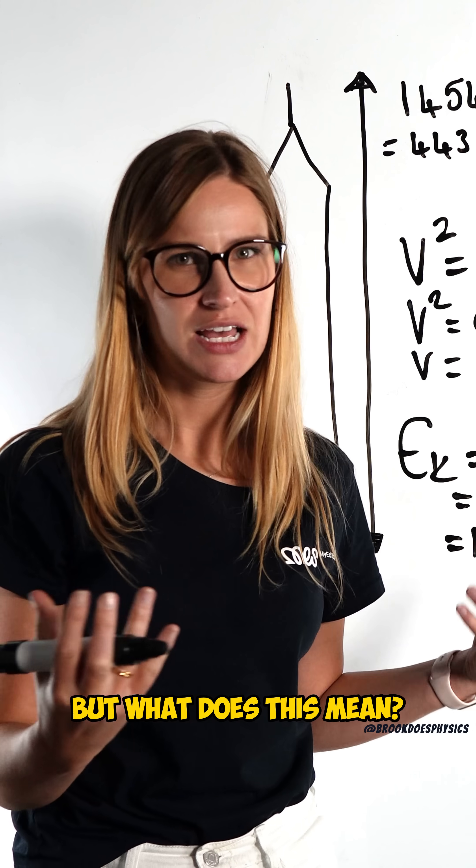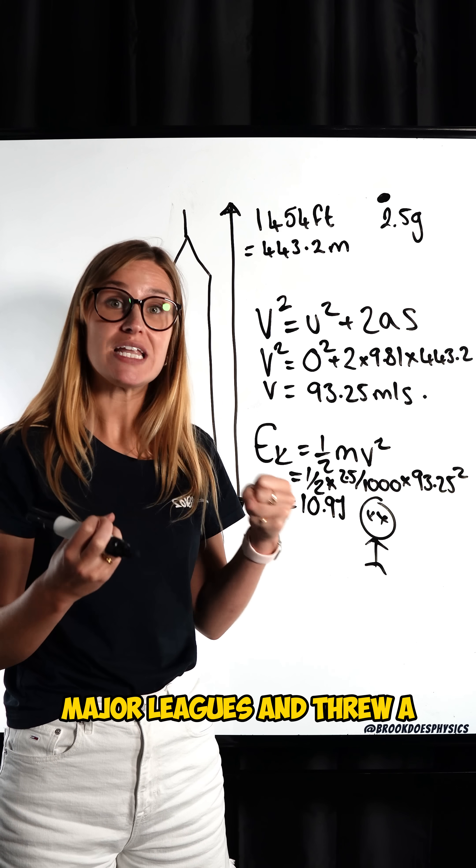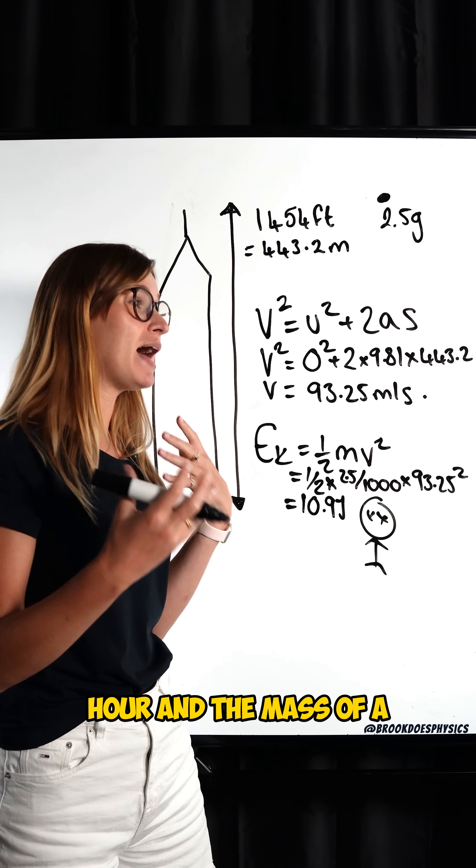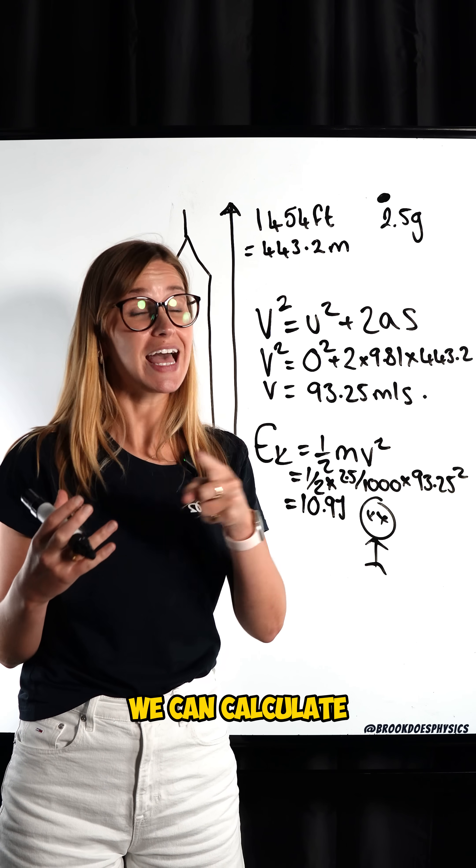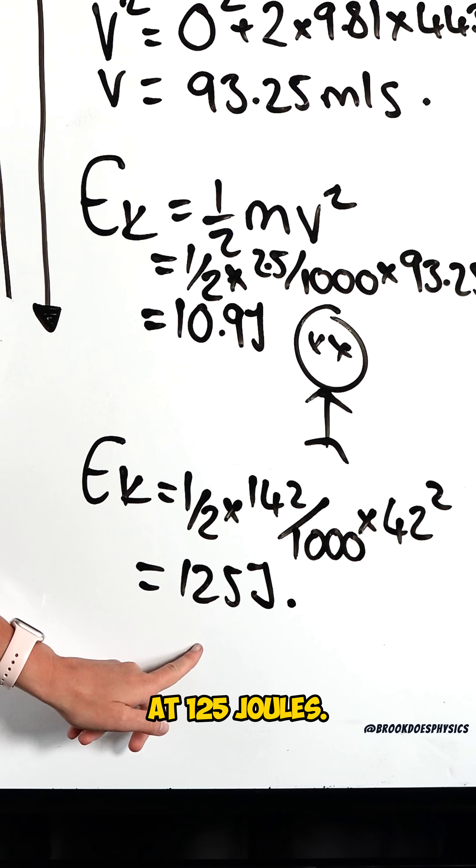What does this mean? We can compare this energy to the energy of a baseball. If someone was in the major leagues and threw a baseball around 94 miles per hour and the mass of a baseball is around 142 grams, we can calculate its kinetic energy. Kinetic energy then comes out at 125 joules.